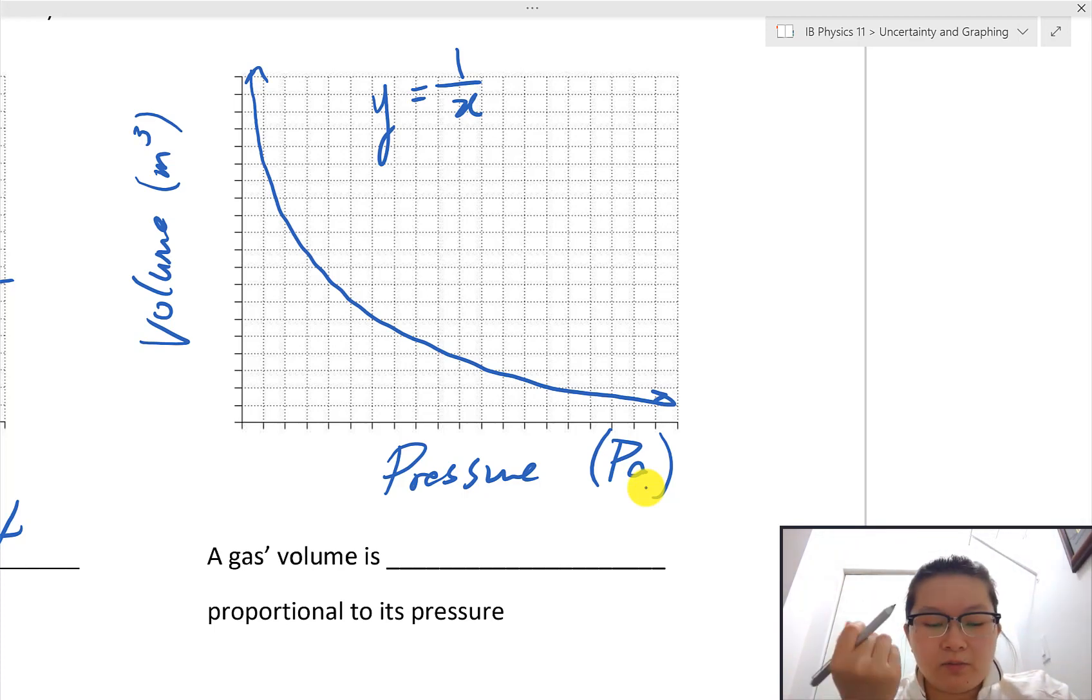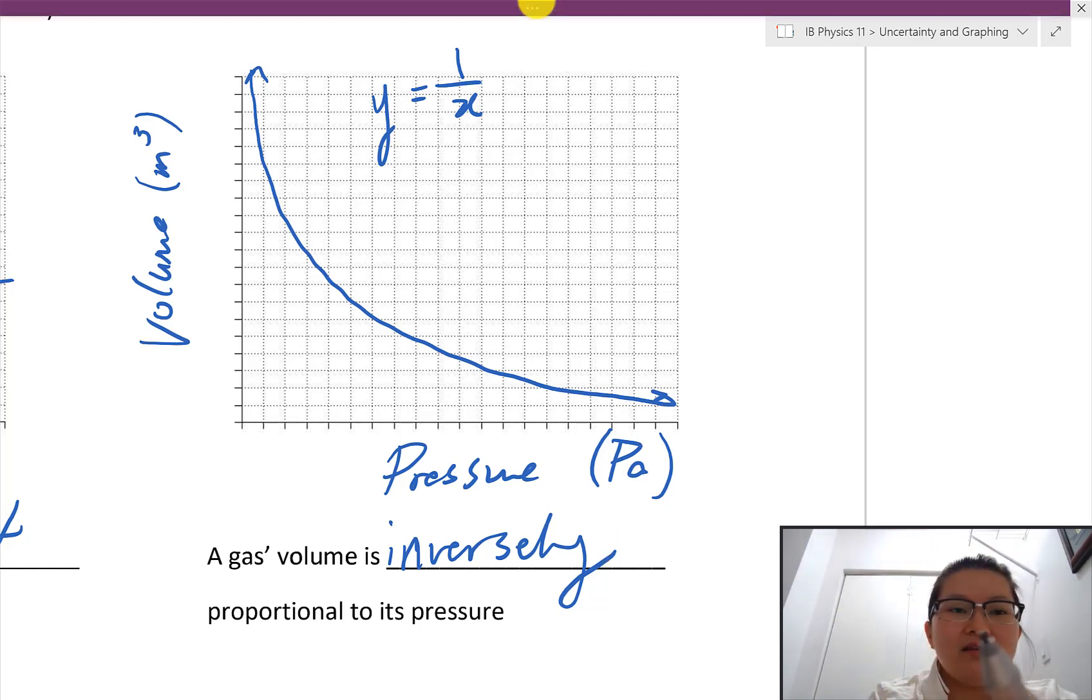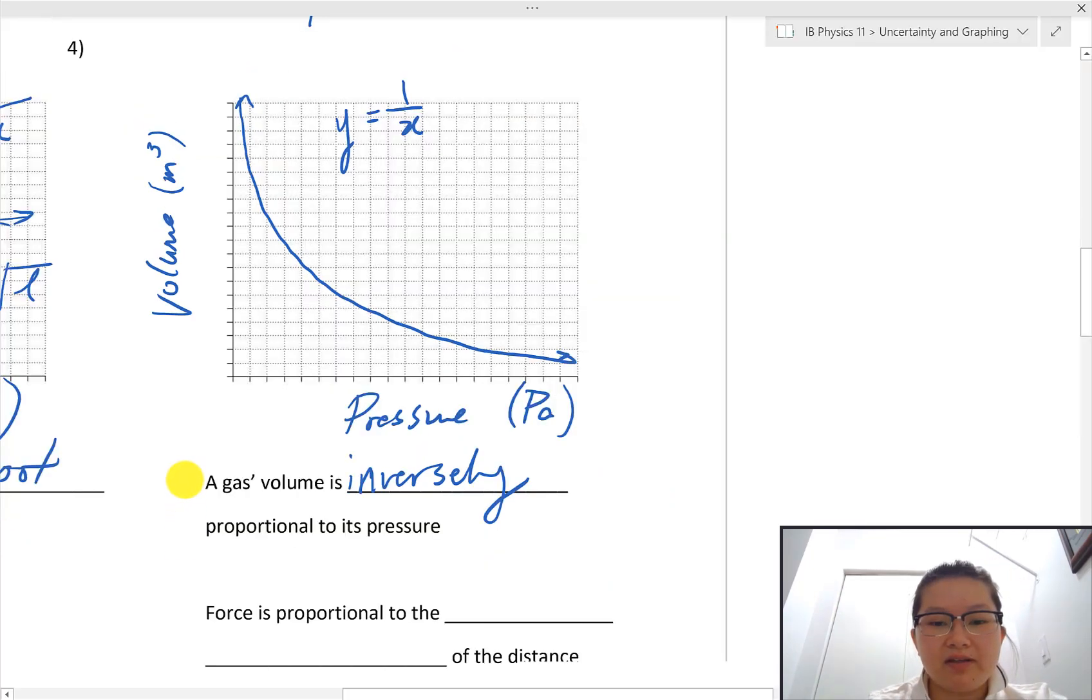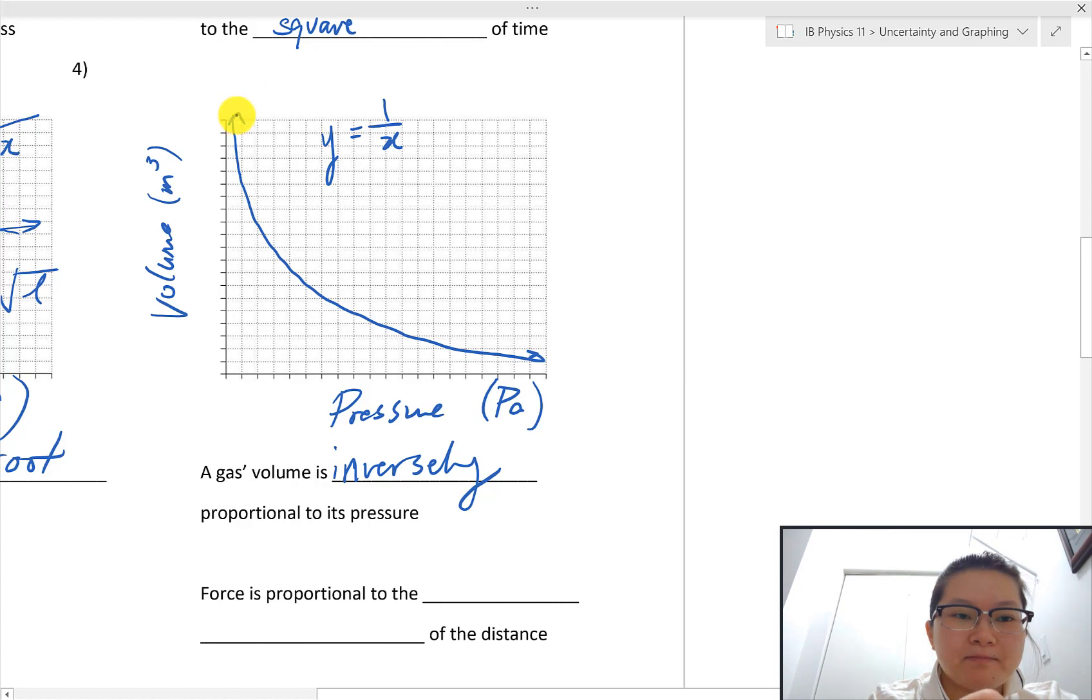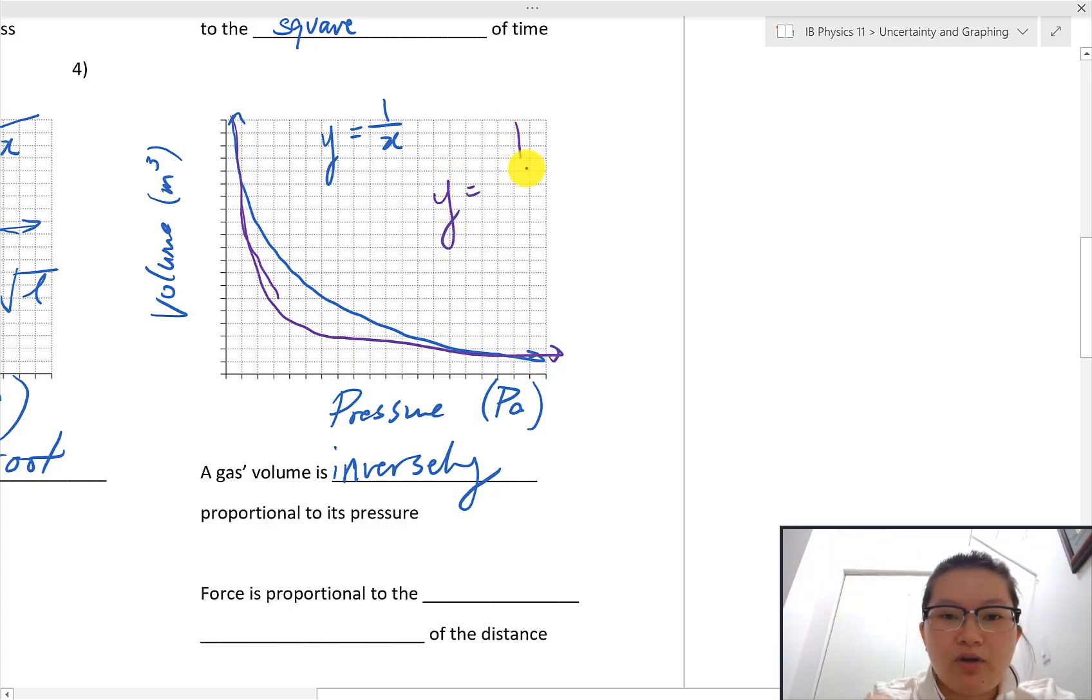This one you might learn—this relationship should be learned later on in thermal physics. The terminology here is the gas volume is inversely proportional to its pressure. There's a thing I have underneath here. Sometimes it is very hard to see, but sometimes you might have a graph that looks very similar to that, but then this is y equals one over x squared. You'll see these inverse square relationships in physics equations as well. The example that I have here is force. If you're wondering, this is Newton's universal law of gravitation. Force is proportional to the inverse square of the distance. So then I will have distance here in meters.